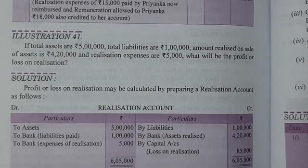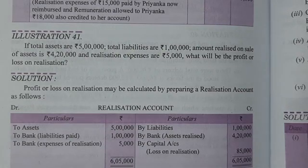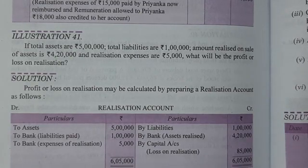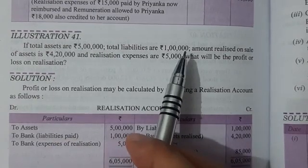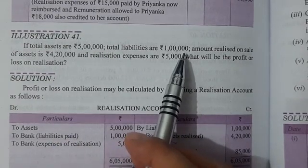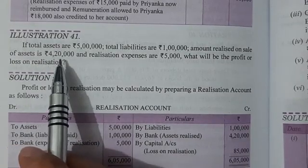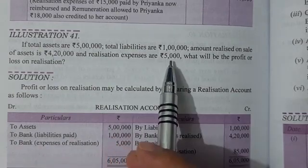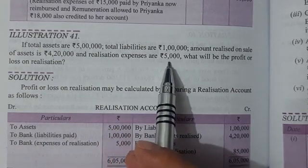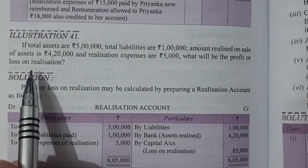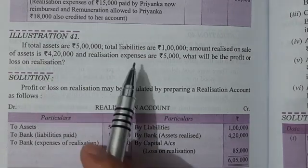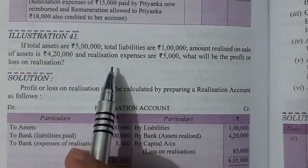Hello students, today we will complete all the illustrations of the chapter Dissolution of a Partnership Firm. Our first illustration: if total assets are 5 lakh rupees, total liabilities are 1 lakh rupees, amount realized on sale of assets is 4 lakh 20 thousand rupees, and realization expenses are 5 thousand rupees — what will be the profit or loss on realization?